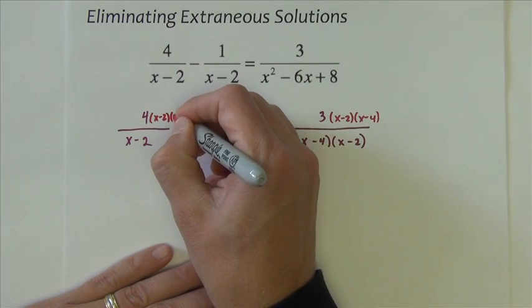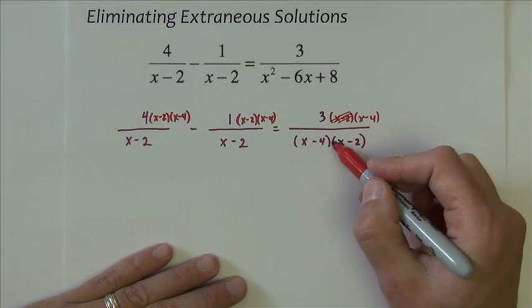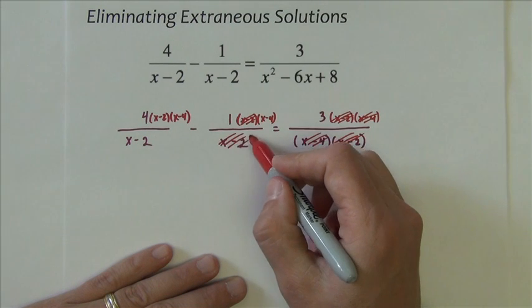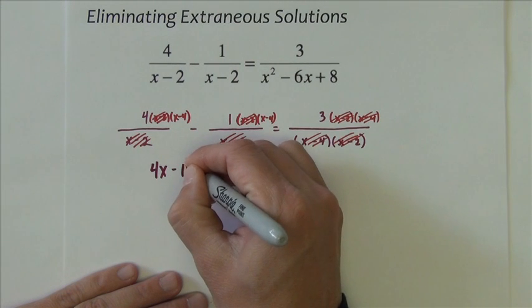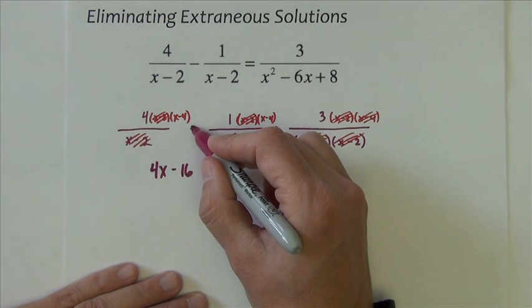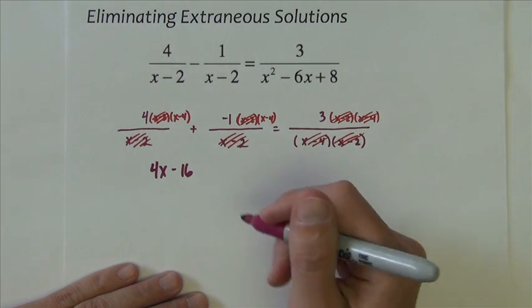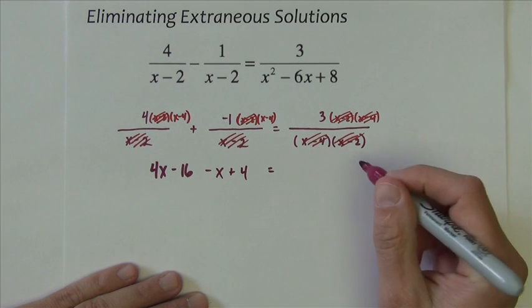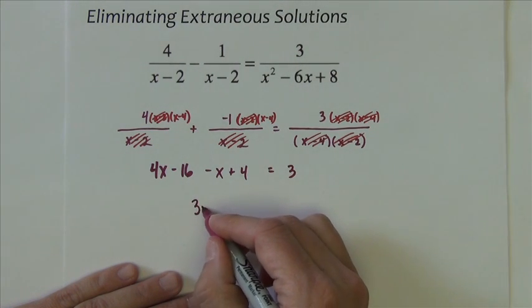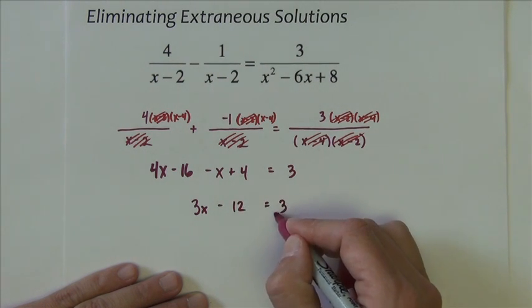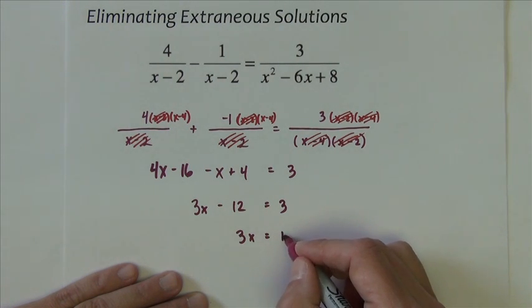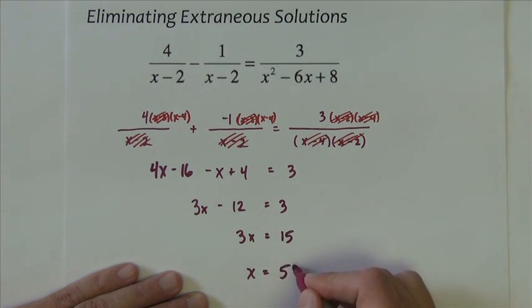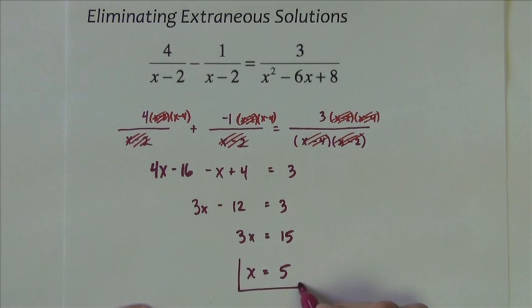Let's slip all this in there. Okay, so we cancel everything that cancels. So what is left behind? We have 4 times x minus 4, which is 4x minus 16. We have, let's look here, be careful, plus negative would be safer. Negative 1 times x minus 4 is negative x plus 4 equals 3. So we get 3x minus 12 equals 3, so 3x equals 15, so x equals 5.